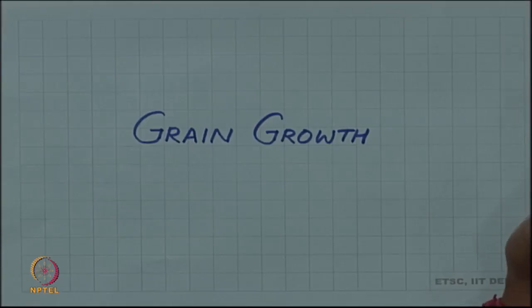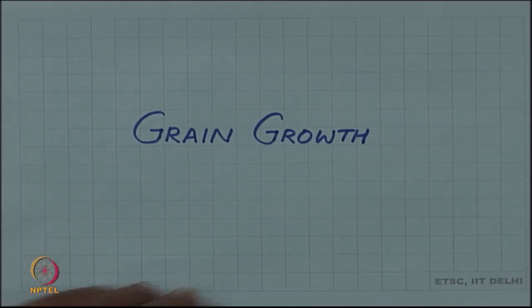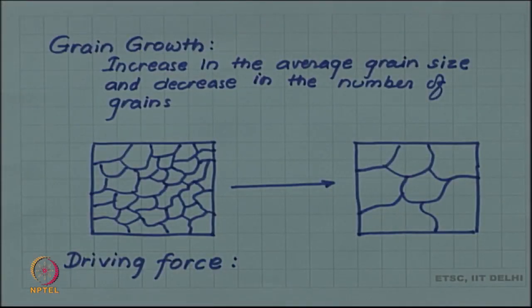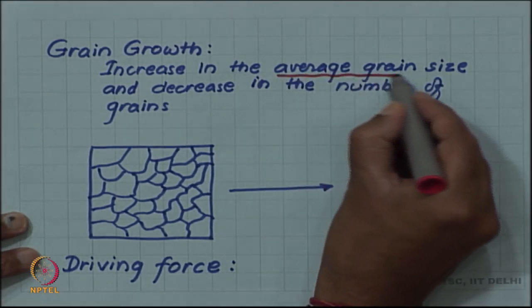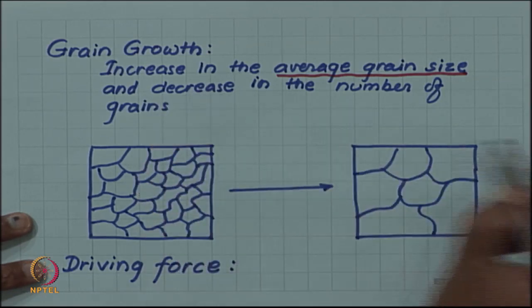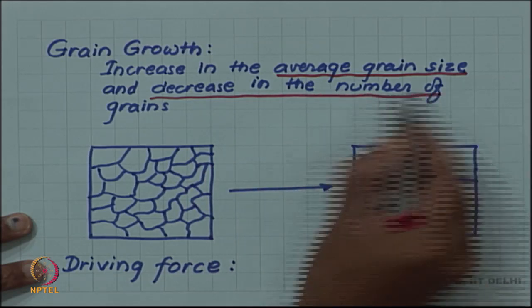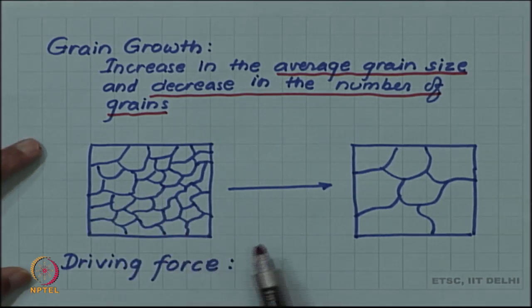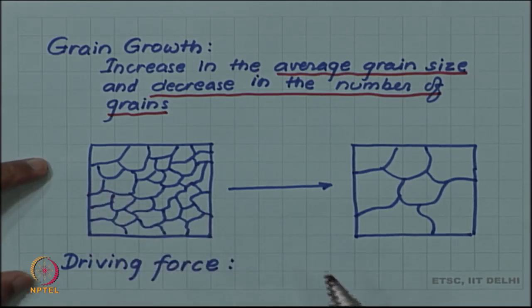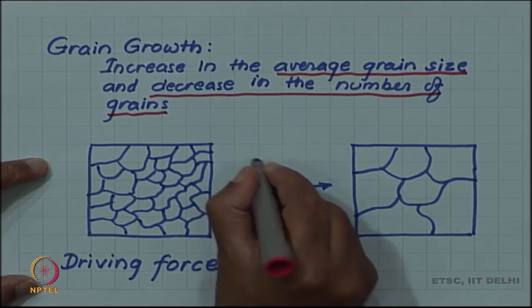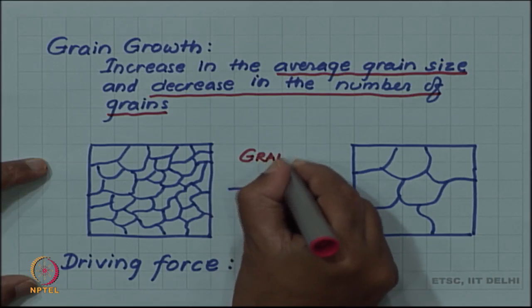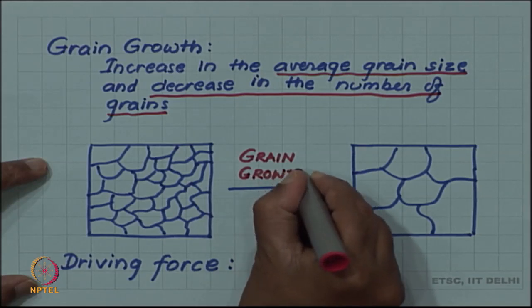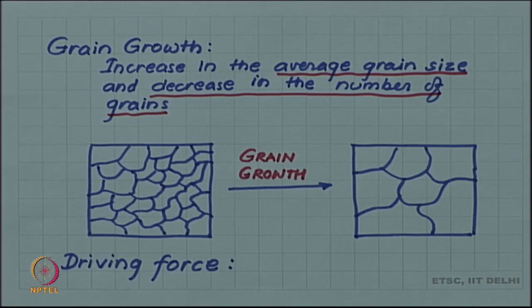The final stage of annealing is grain growth. The first stage is recovery, the second is recrystallization, and it is followed by grain growth. Grain growth, as the name suggests, is an increase in the average grain size, and since the total volume of the material is constant, this leads to a decrease in the number of grains. A fixed volume of material with a fine grain microstructure undergoing annealing and after recrystallization will have grains that increase in size — the same volume is now divided into a smaller number of larger grains.